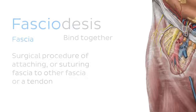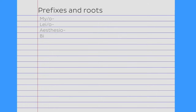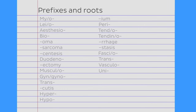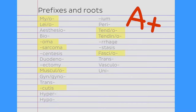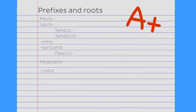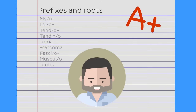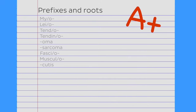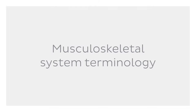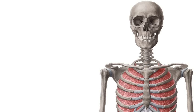Of course, like with all systems of the body, the list of all possible prefixes and roots is long. But if you've managed to take note of these, you've made a great start. Now that we've been introduced to some of the most common prefixes and roots related to the muscular system, let's turn our attention to the terminology we'll encounter when looking at skeletal muscles, in particular how they are named.